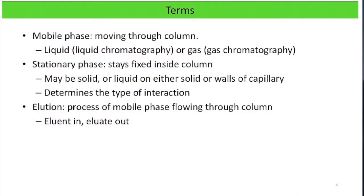In chromatography there are two different phases. The mobile phase is what moves through the column. In liquid chromatography that's going to be a liquid — some kind of buffer or organic mixture of compounds. In gas chromatography the mobile phase is going to be a gas. The purpose of the mobile phase is to help the analytes move through the column, because the analytes are partitioning between the mobile phase and the stationary phase, and the mobile phase helps them move through so you get that separation occurring.